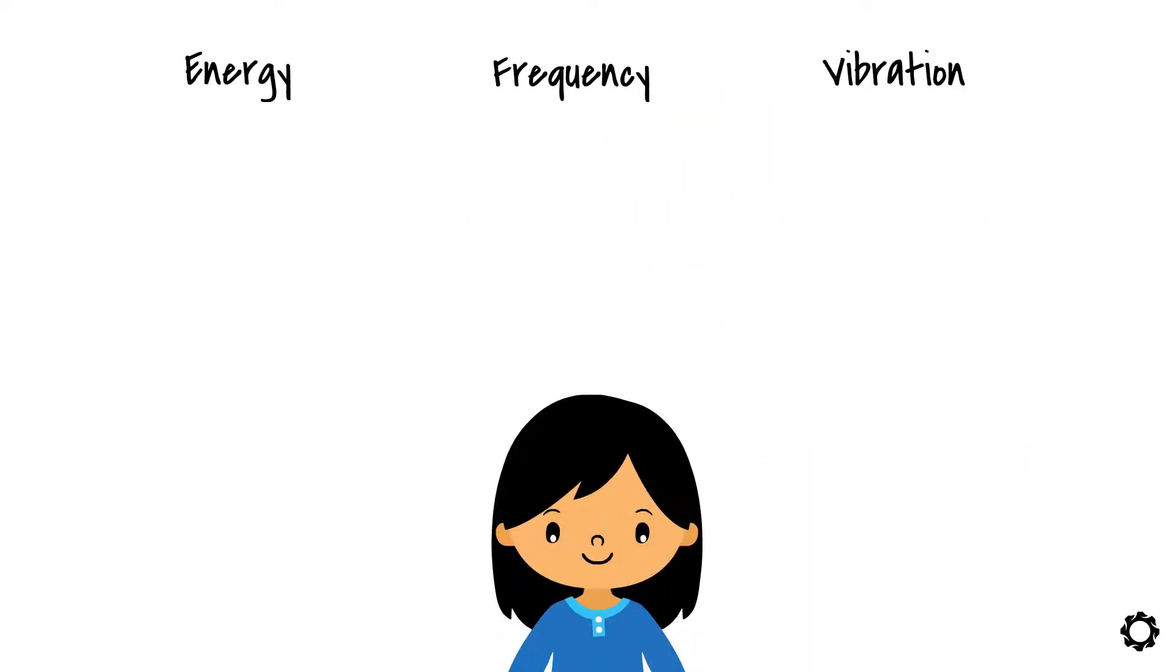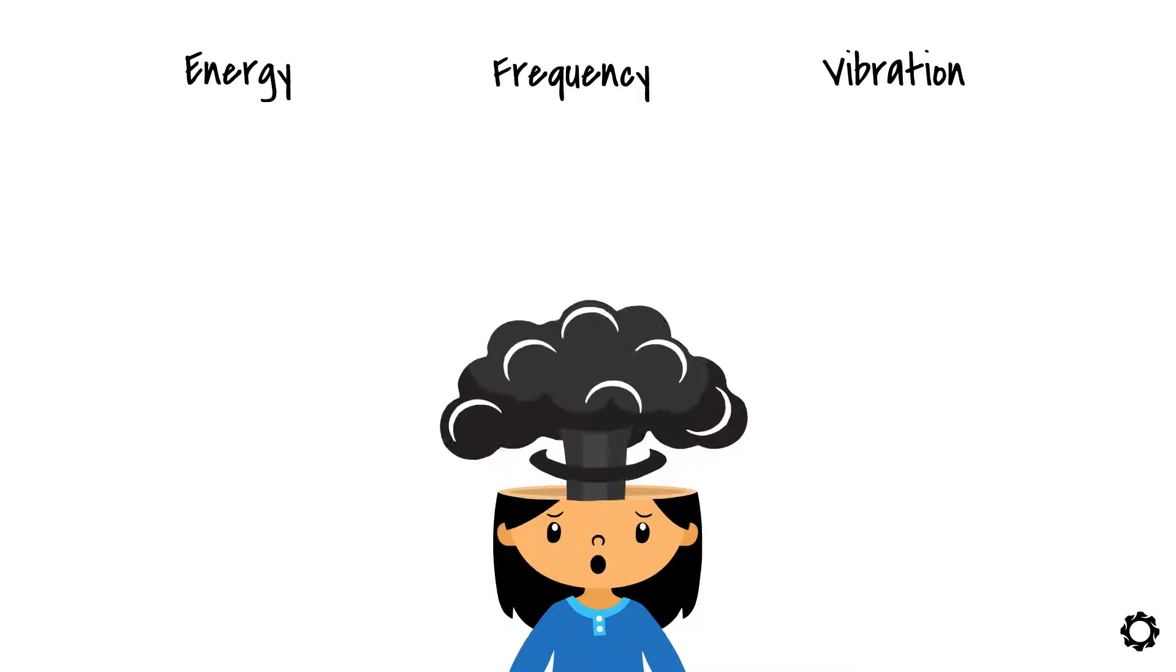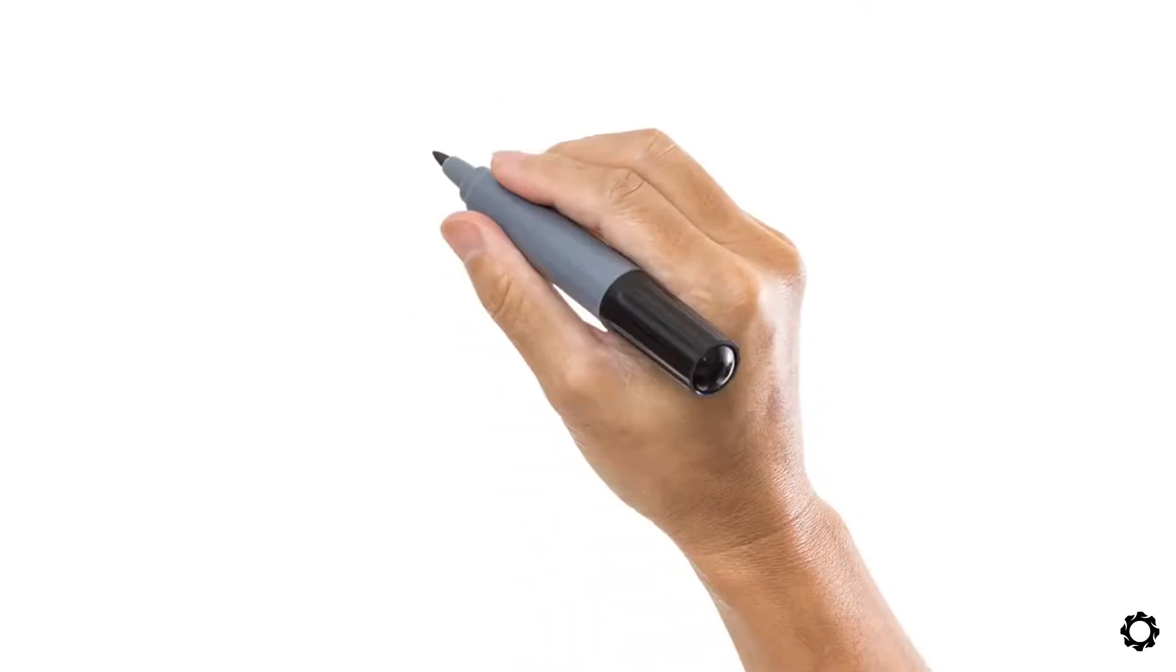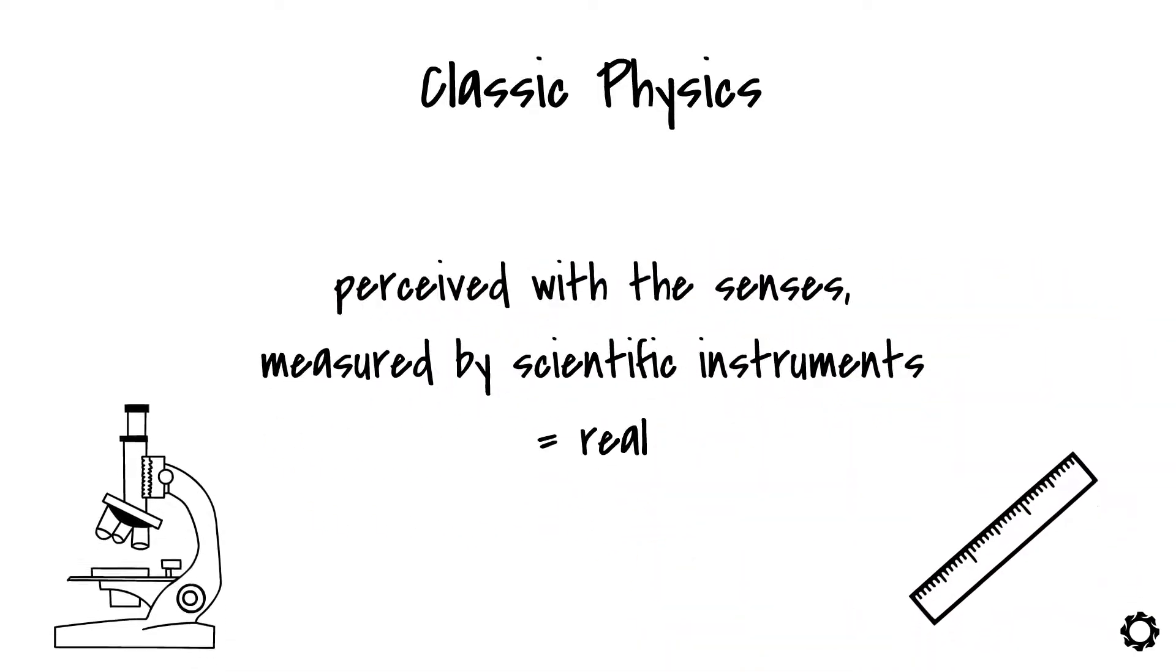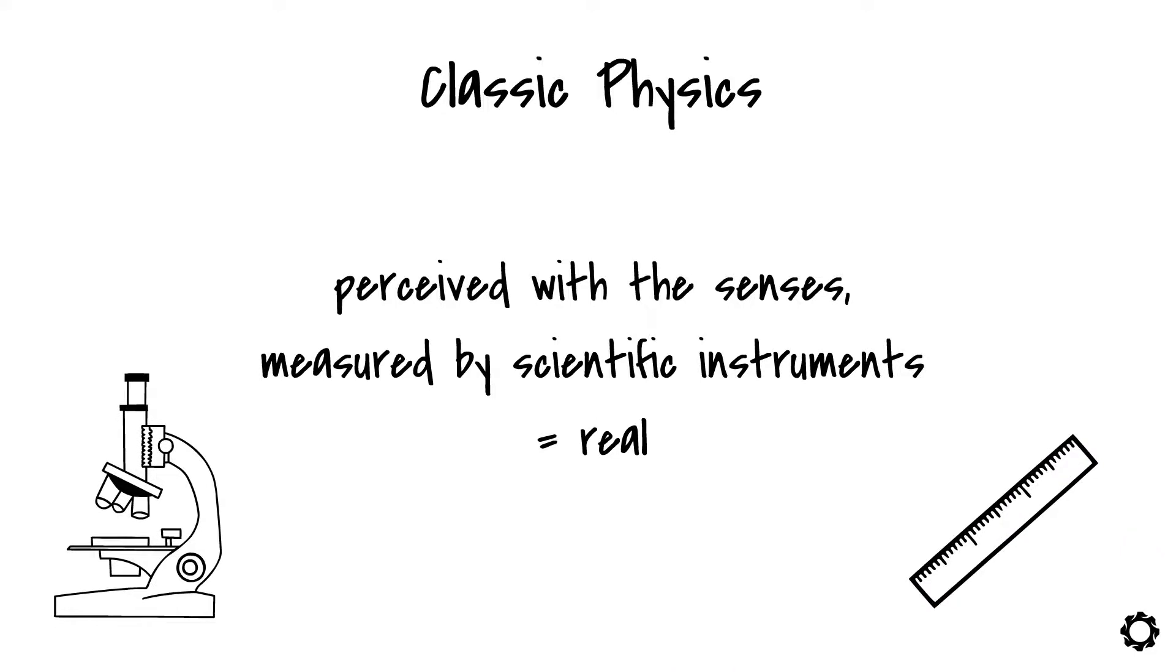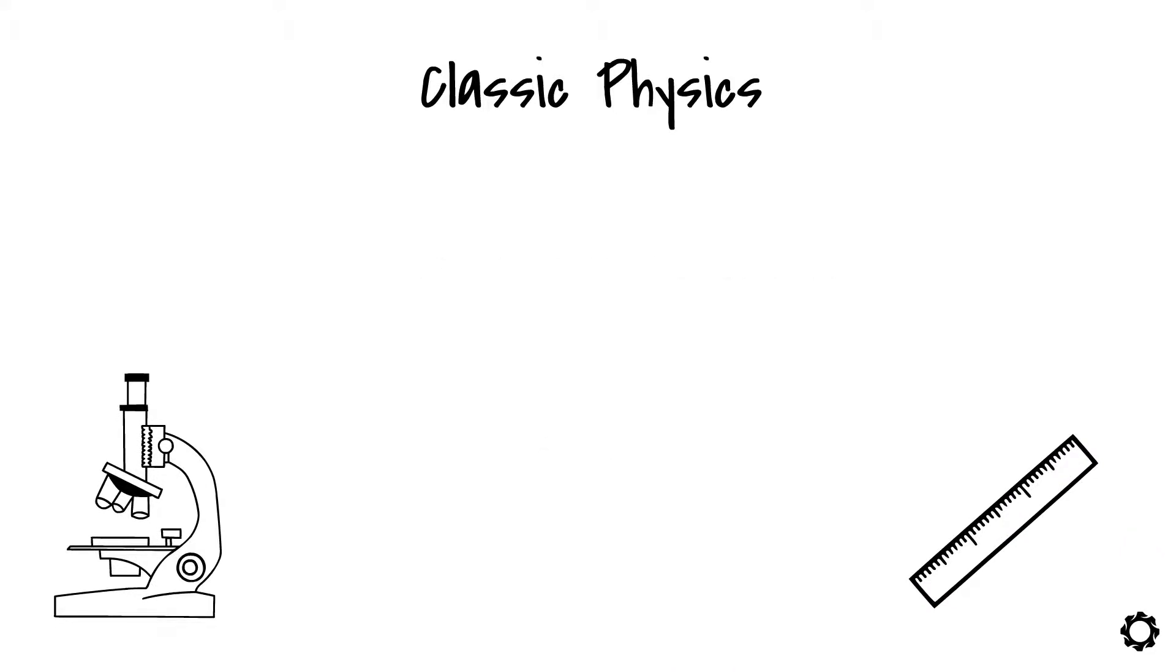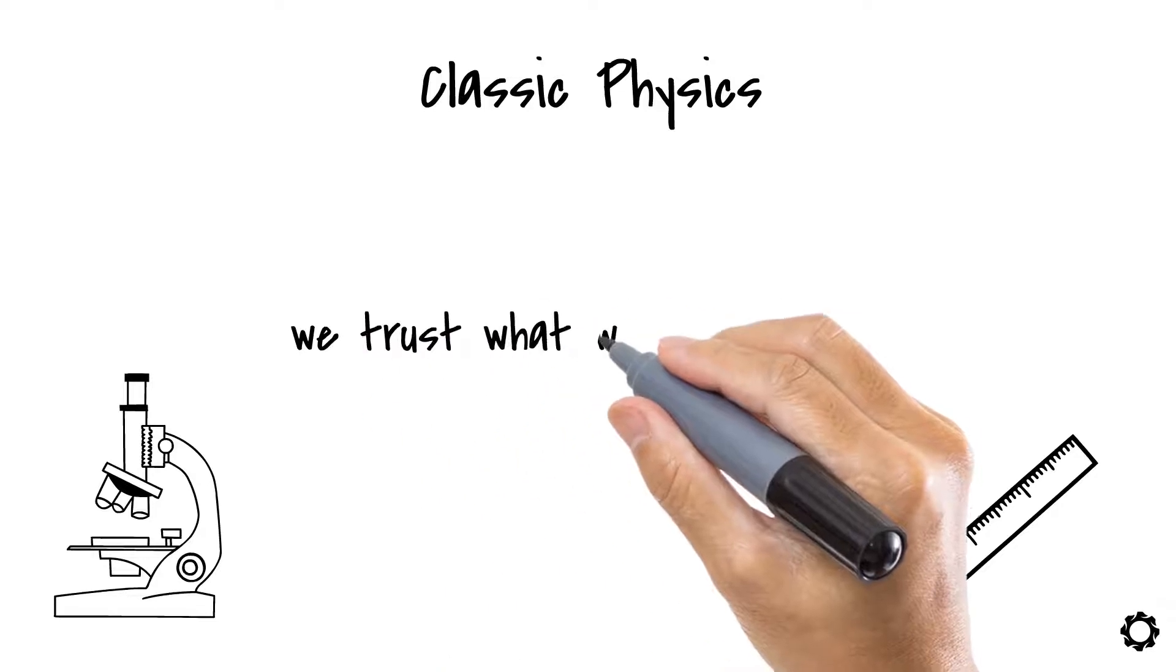Stay with us, and we will show you a point of view which will totally blow your mind. Let's start from classic physics, which states that only what can be perceived with the senses and measured by scientific instruments is real. This totally makes sense. We see the application of this concept in our daily life, where we can trust what we can measure.